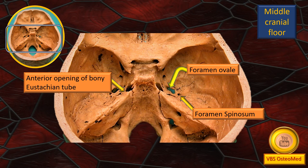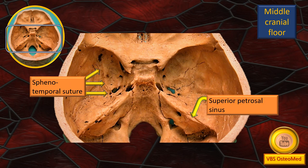Immediately lateral to the foramen lacerum is a larger curved arrow pointing to the foramen ovale. The foramen ovale transmits the mandibular part of the trigeminal nerve to the infratemporal fossa. Immediately posterior and lateral to the foramen ovale is the foramen spinosum, which transmits the middle meningeal artery from the infratemporal fossa into the middle cranial fossa. Both communicate with the infratemporal fossa.